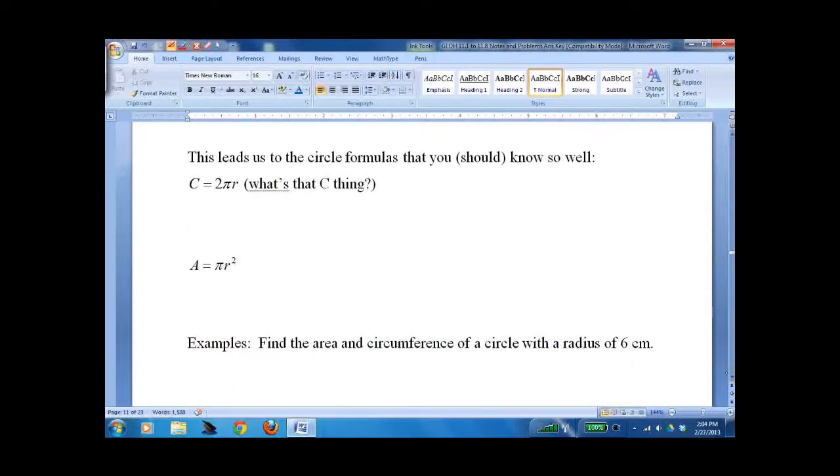So here's our formulas. Circumference equals 2 times pi times radius. The tricky thing us evil math teachers always do is give you diameter and see who's paying attention. A lot of people don't. They just grab the number and run with it. So make sure you're dealing with the radius.